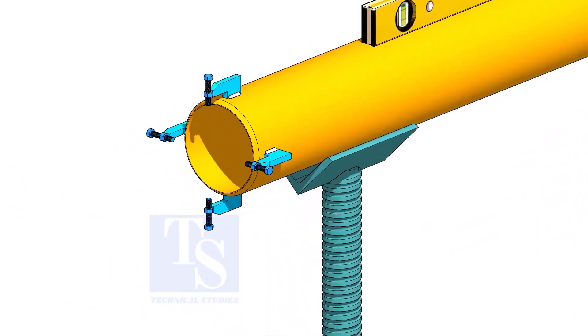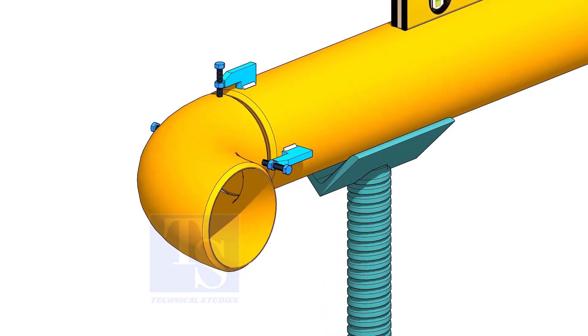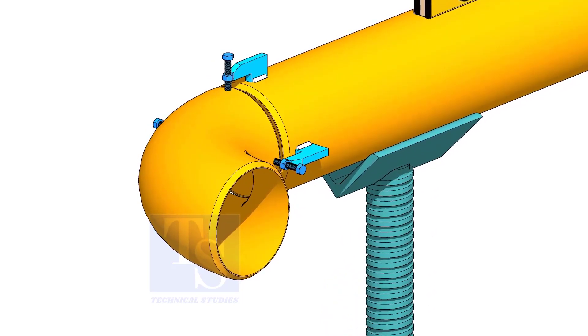Fix the clamps on the pipe. Put the elbow and the gap rod and slightly tighten the clamp bolts.